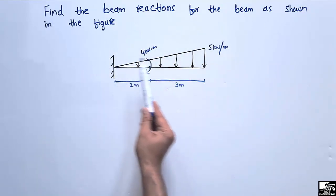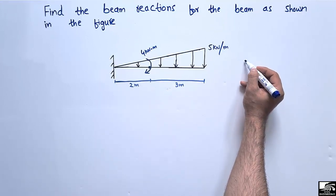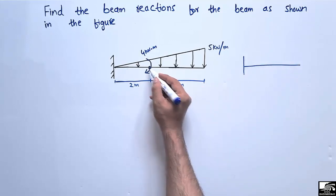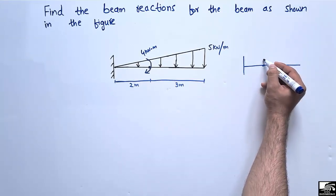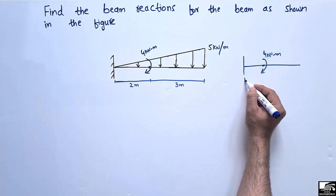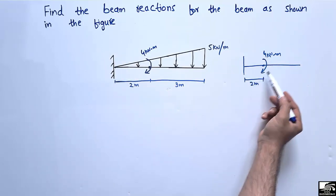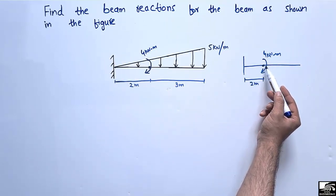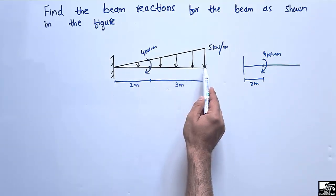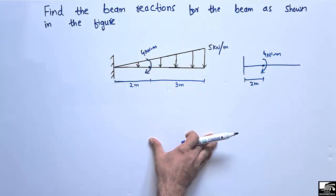Drawing the free body diagram, this moment of 4 kilonewton meter acts at a distance of 2 meters from the fixed support. It is important to note how to solve the problem when there is a uniformly varying load and also a moment. In this lecture we are briefly solving this numerical example.